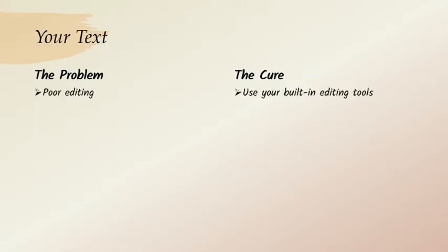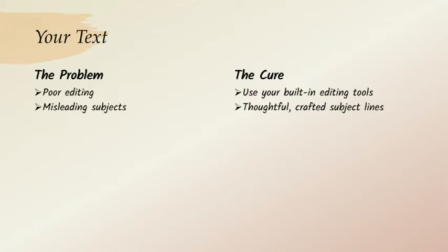We've all received spam messages so horribly written that we read them aloud to friends and laughed. Don't be that person. Use your spell checker. Use your grammar checker. Make sure that the text of your message doesn't look like something the mail server wants to hold up to its friends and laugh about. Make sure that your subject line is related to your content — AI engines will scan your subject line to see whether it's totally unrelated to the content, and if it can't find a connection, it will flag your message as spam.